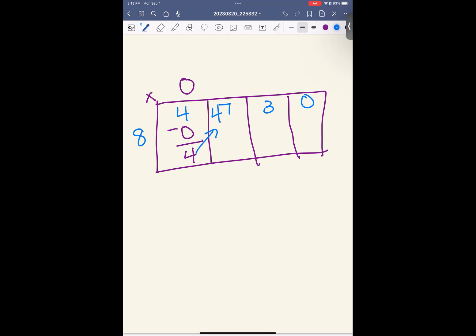How many groups of 8 can I take out of 47? 5, because 5 times 8 is 40. Subtract. 47 minus 40 is 7. 7 is less than 8. That's great. Bring it with you. How many groups of 8 can I take out of 73? 9, because 9 times 8 is 72. 73 minus 72 is 1. Is 1 smaller than 8? Yep, that's great. Bring it with you.